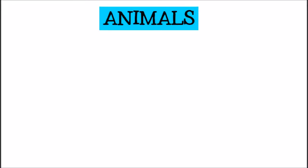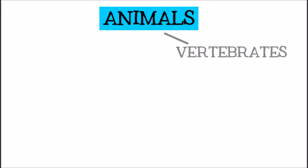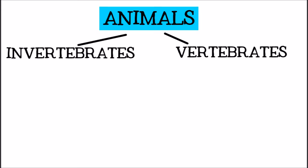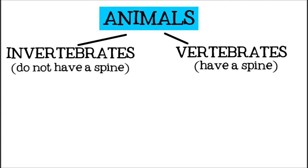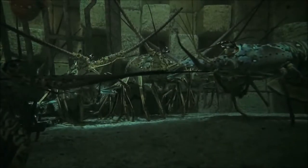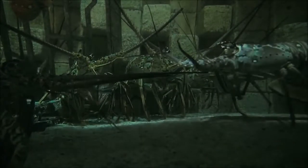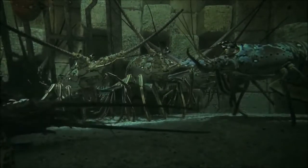The two largest groups of animals are vertebrates and invertebrates. Vertebrates are animals that have spines, or backbones. Invertebrates are animals that do not have backbones. Most of the animals in the world are invertebrates.